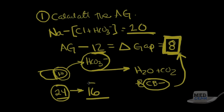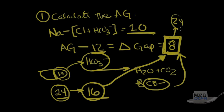Another way to look at this: take your current bicarbonate level and add the delta gap — you should get back to 24. If you get something like 16 or 17, that means another process is causing additional bicarbonate loss. If you get something greater than 24, say 30, that means another metabolic process is causing bicarbonate gain. This lets us detect multiple simultaneous metabolic processes.